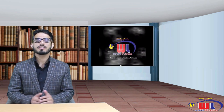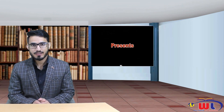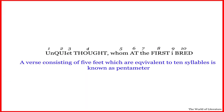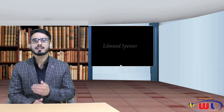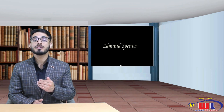Now if you have watched the lecture on William Shakespeare, a verse consisting of ten syllables is known as pentameter. Written in ten syllables means written in pentametric form. Having ten syllables means that this is a pentameter.